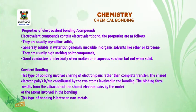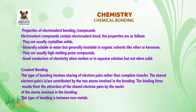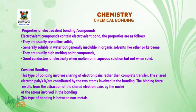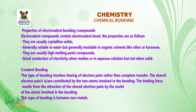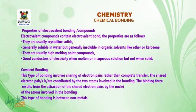Now let's go to covalent bonding. This type of bonding involves sharing of electron pairs rather than complete transfer. The shared electrons are contributed by the two atoms involved in the bonding. The binding force results from the attraction of the shared electron pairs by the nuclei of the atoms involved. This type of bond is between non-metals.